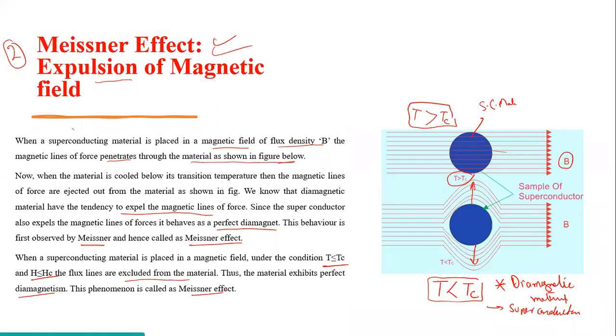When a superconducting material is placed in a magnetic field under the condition T ≤ Tc, and the critical magnetic field is less than the applied magnetic field, the magnetic lines are excluded from the material. The material exhibits perfect diamagnetism. These phenomena are called the Meissner effect — the material is showing perfect diamagnetism.